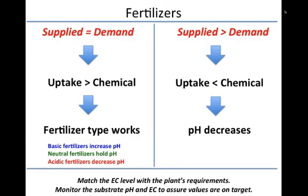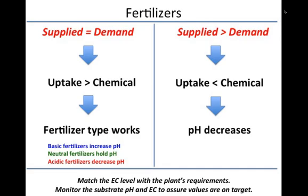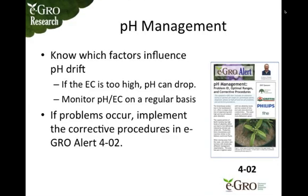The take-home message is that you really need to match EC level with the plant's requirements. That's where monitoring both pH and EC is important — to make sure you're on target and not driving down pH for your plants. In conclusion, we've discussed various factors that influence pH drift, but if EC is too high, pH can drop. The best approach is to monitor pH and EC on a regular basis to make sure you're in balance and not giving plants too much nutrition.